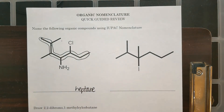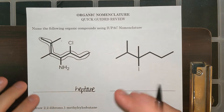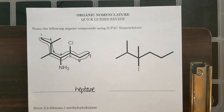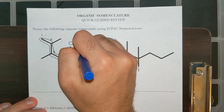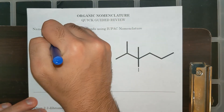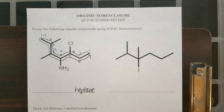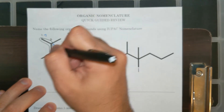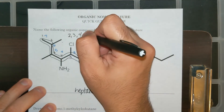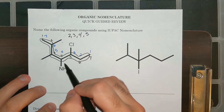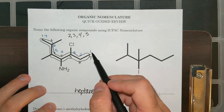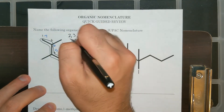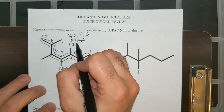I have to identify how I'm going to number this and where my substituents would get the lowest set of numbers. Counting from left to right: one, two, three, four, five, six, seven. Or I could go the other way. If I number it from left to right, I'll have substituents on the second, third, fourth, and fifth carbons — so 2, 3, 4, 5. If I number it from right to left, I would have substituents on the third, fourth, fifth, and sixth carbons. So I'm not going to number it from right to left because those would be higher numbers.